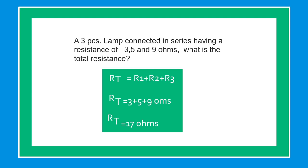In this next example, three lamps connected in series have resistances of 3, 5, and 9 ohms. What is the total resistance? Since this is a series circuit, we add the individual resistances to find the total resistance. RT equals 3 plus 5 plus 9 ohms. The total resistance is 17 ohms.